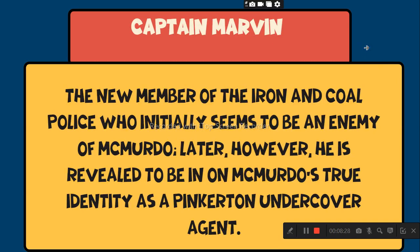Captain Marvin. The new member of the iron and coal police who initially seems to be an enemy of McMurdo. Later, however, he is revealed to be in on McMurdo's true identity as a Pinkerton undercover agent.